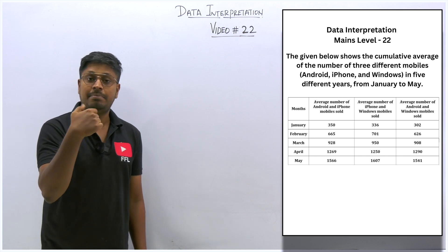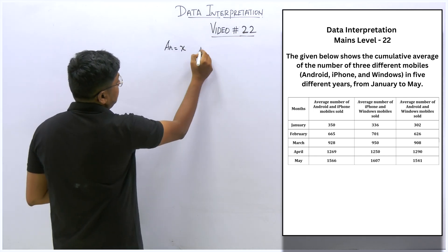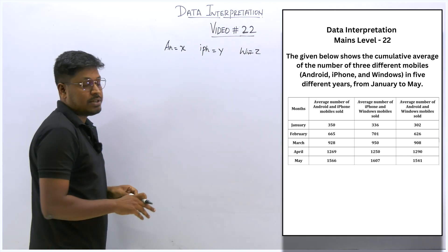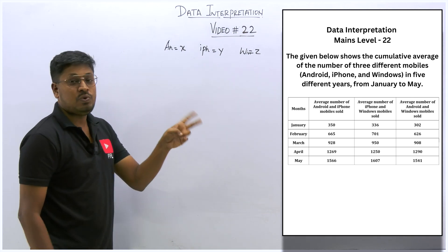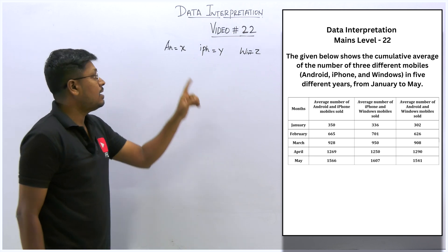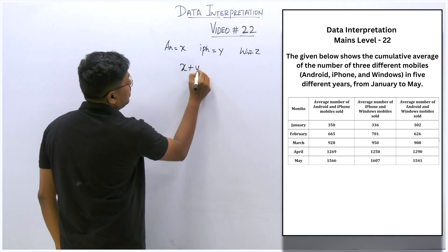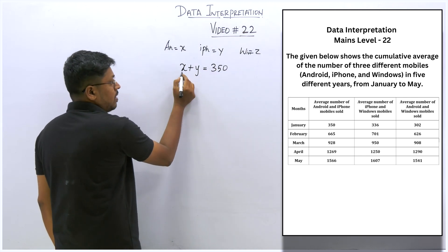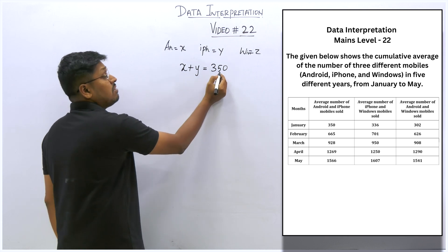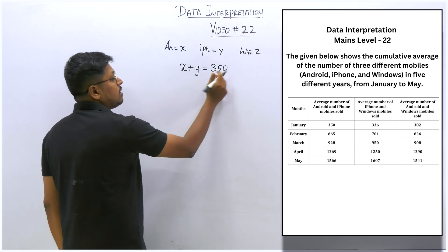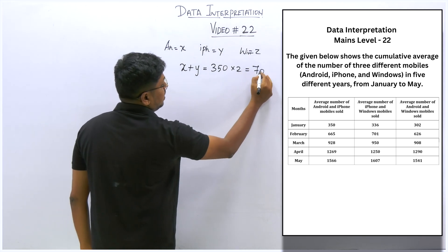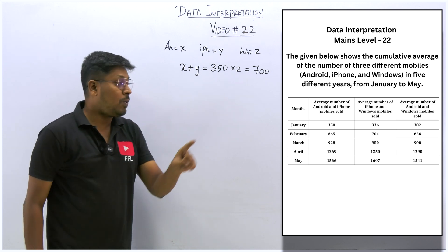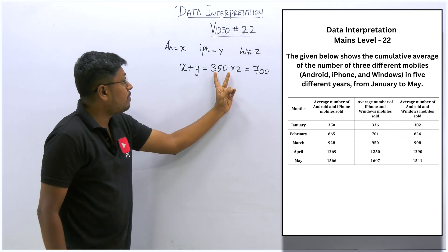Keep Android as x, iPhone as y, and Windows as z, then frame an equation. Initially they have given averages for pairs. For Android and iPhone: x+y divided by 2 equals the average which is 350. So x+y equals 350 times 2, which is 700. So 700 is the total mobile phones sold in the month of January for Android and iPhone alone.